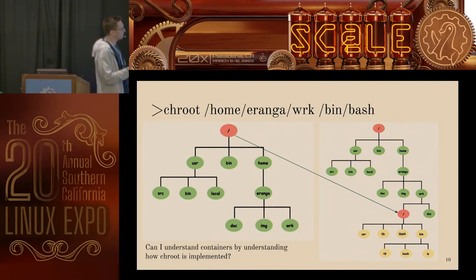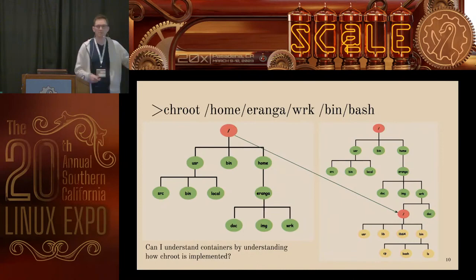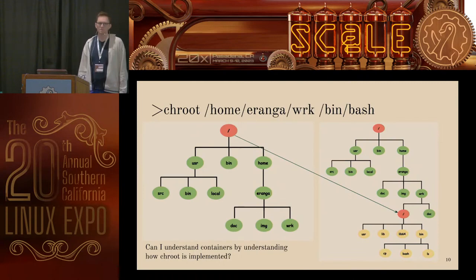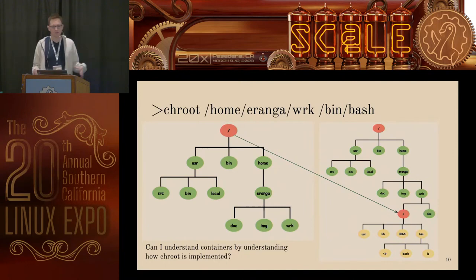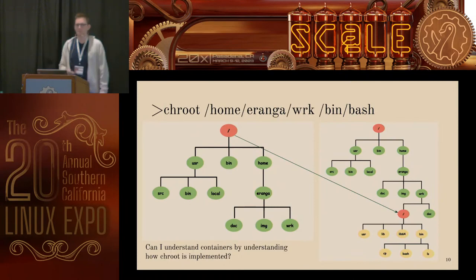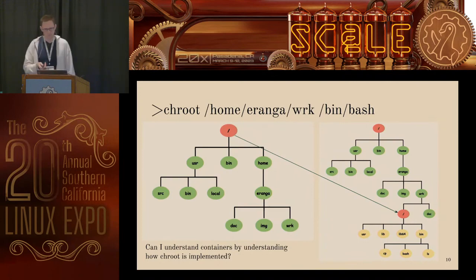The way that you chroot is like this: here is my file structure, and I can call this command, pass it a new root, and then pass it a process to run. It's going to start up bin/bash, but for bin/bash the root is going to be changed — it's changed where that top-level slash is to be inside that file structure. That makes sense as a simple concept. It wasn't super clear to me how that made containers work. So I thought: can I understand containers by understanding how that chroot command is implemented? Can I just dig in further?